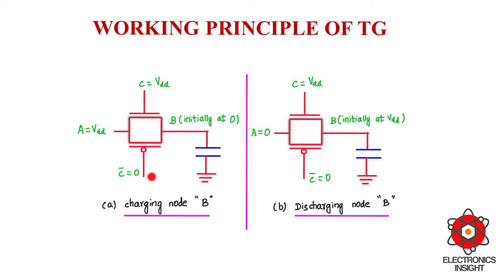Therefore both pass transistors are on and it acts like a closed-state switch, allowing the signal from the source side to pass through the gate and appear at the drain side — so A will be equivalent to B. On the other hand, if C equals zero, both transistors are off, creating an open circuit between nodes A and B, and the output in the off condition is a high-impedance state.